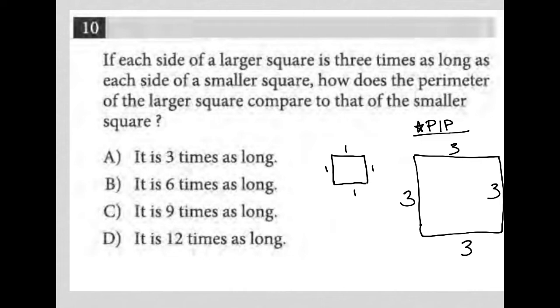How does the perimeter of the larger square compare to that of the smaller square? Well, the perimeter here will just be equal to four. We just add up all of these ones. One plus one plus one plus one. We get four.